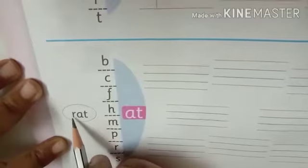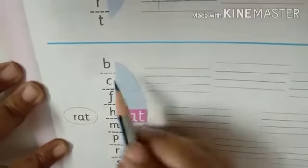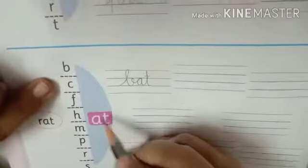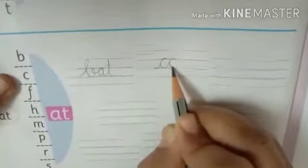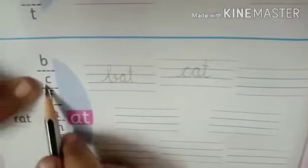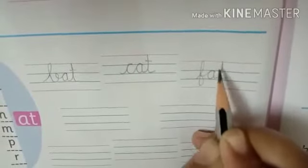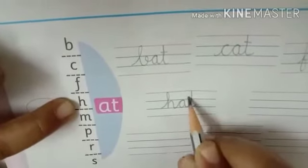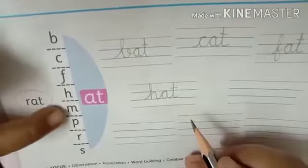Now changing the first letter with the 'at' ending: B joined with A and T makes B, A, T — bat. C joined with A and T makes C, A, T — cat. After F: F, A, T — fat.